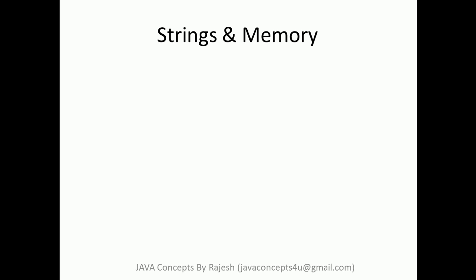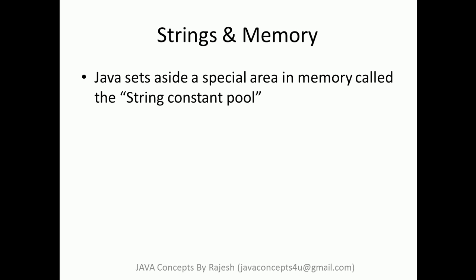We'll see how Java manages string objects in memory. For any programming language, managing memory is the most important task as an application grows. In Java, JVM has a very efficient way of handling this — it sets aside a special area in memory called the String Constant Pool. Whenever JVM gets a request to create a string object, it first checks the String Constant Pool whether the same value exists or not.